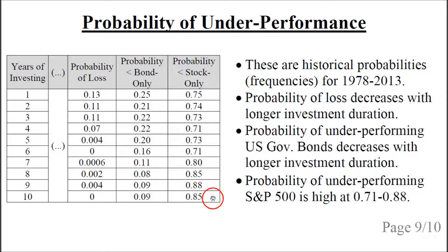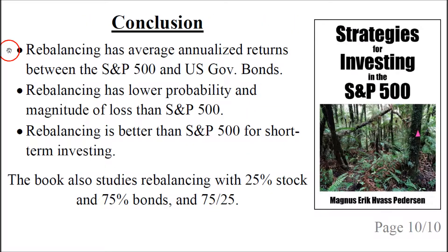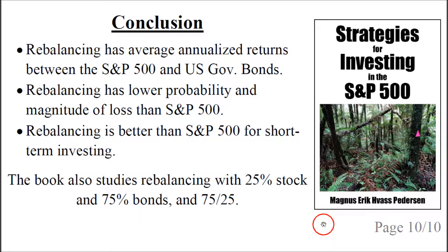The rebalancing strategy with 50% stock and 50% bond often performed worse than a full investment in the S&P 500: for one year the probability was 75%, and for 10 years it was 85%. The conclusion is that the rebalancing strategy had average annualized returns between the S&P 500 and US government bonds, but with lower probability and magnitude of loss than a full S&P 500 investment. Rebalancing is better than a full S&P 500 investment for short-term investing because the risk of losing a lot of money is lower.